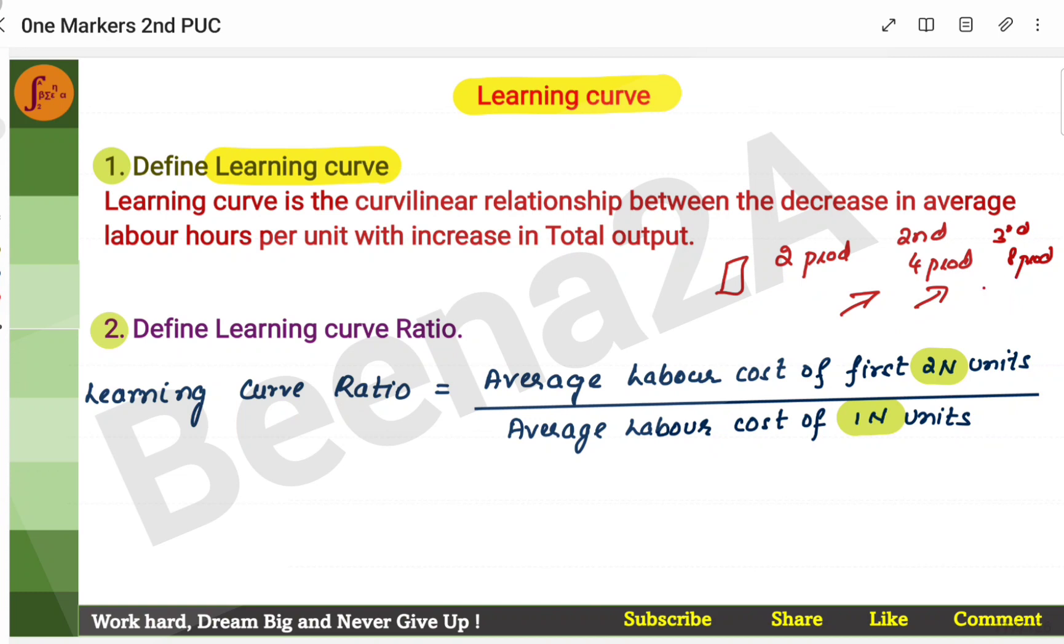Thereby what will happen? The number of products that I produce will increase. That means the cost also will decrease. So, this is what is called as learning curve. Now, define learning curve ratio. Learning curve ratio is, it's given by the formula here.